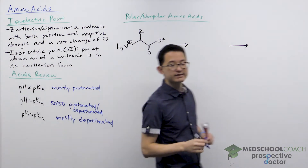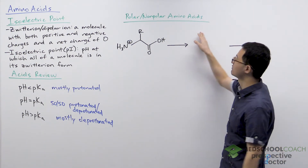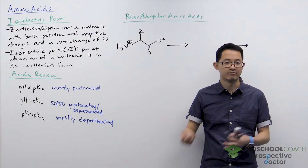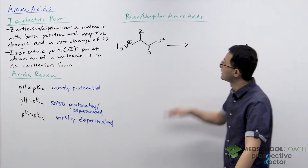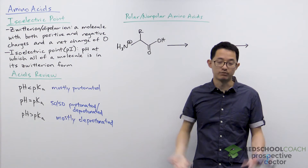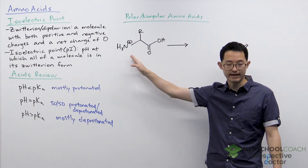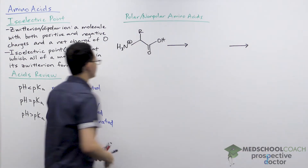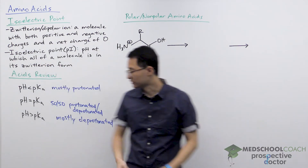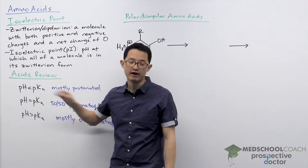Keeping this in mind, let's take a look at amino acids, starting first with polar and nonpolar amino acids. Acidic and basic amino acids are more complicated because their side chains are acidic and basic and can donate or accept protons. With polar and nonpolar amino acids, we don't have to worry about the side chain — we only have to worry about the amino group and the carboxyl group, both of which can accept or donate protons. Looking at this molecule, both the amino group and the carboxyl group are protonated, meaning we're in a situation where the pH is less than the pKa of both functional groups.